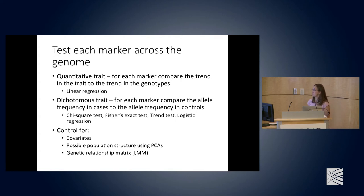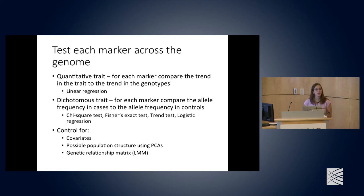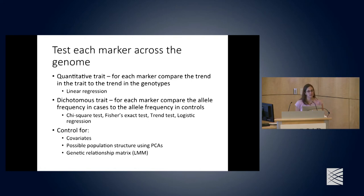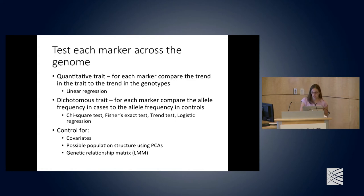For dichotomous traits, for each marker we compare allele frequency in cases to controls through chi-square tests, Fisher exact tests, trend tests, or logistic regression. We can control for covariates such as age and sex, and adjust for possible population structure through principal components. If you have family data, you'll want to control for familial relationships through kinship matrices or genetic relationship matrices.